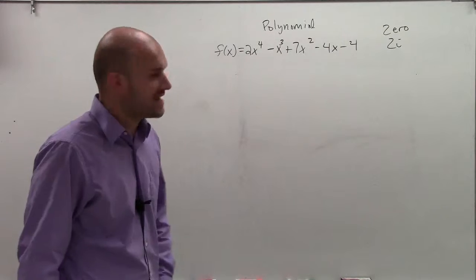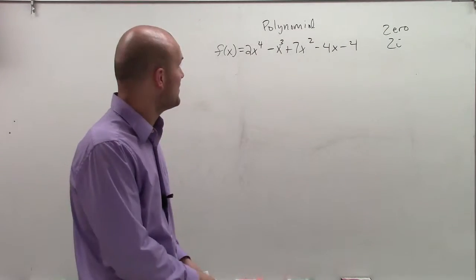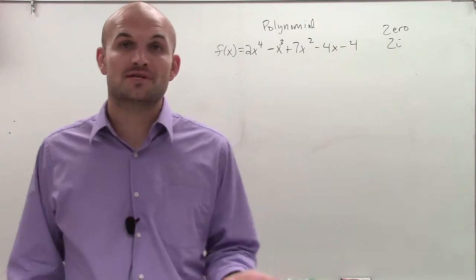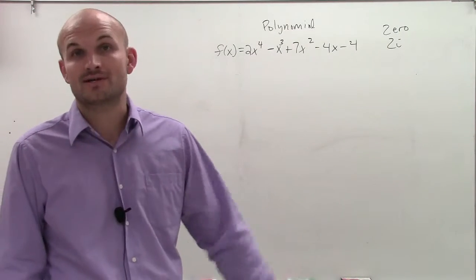Welcome. So what I have here is a polynomial, and on the polynomial I have a zero, 2i. What I want to do is find the remaining zeros of this polynomial, given one zero is 2i.